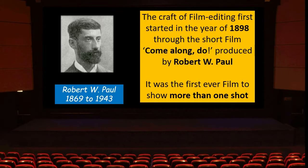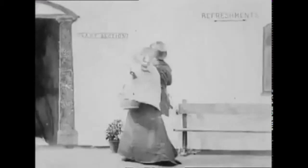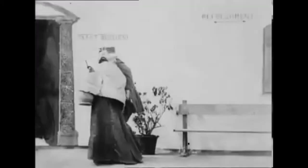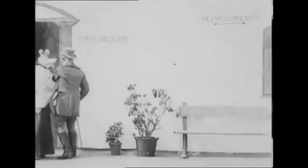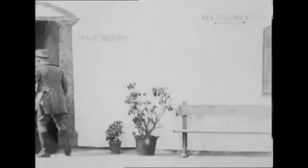Film editing first started in 1898 through the film Come Along Do, produced by Robert W. Paul.